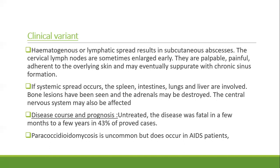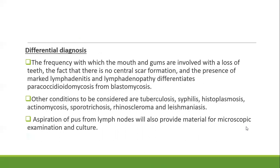Untreated, the disease is fatal in a few months to a few years in 43 percent of proven cases. It is uncommon but does occur in AIDS patients. Differential diagnosis includes blastomycosis, tuberculosis, syphilis, histoplasmosis, actinomycosis, sporotrichosis, rhinoscleroma, and leishmaniasis. Aspiration of pus from lymph nodes provides material for microscopic examination and culture.